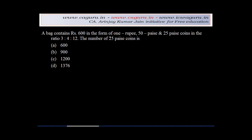A bag contains Rs. 600 in the form of 1 rupee, 50 paise and 25 paise coin in the ratio of 3 is to 4 is to 12. The number of 25 paise coin is how many? You're given 4 options over here.